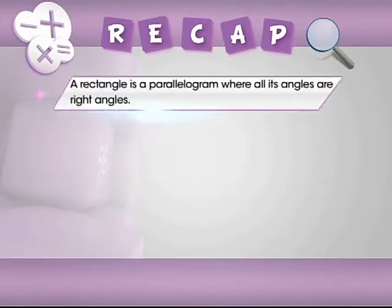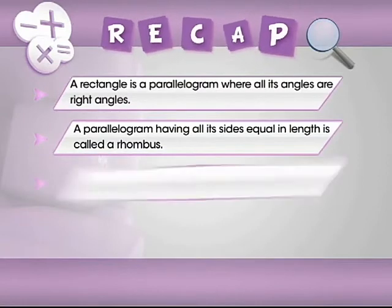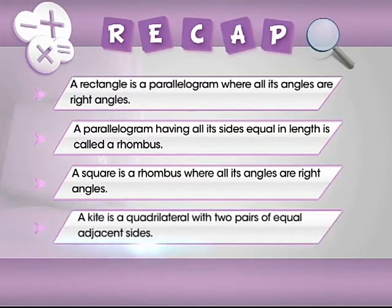A rectangle is a parallelogram where all its angles are right angles. A parallelogram having all its sides equal in length is called a rhombus. A square is a rhombus where all its angles are right angles. A kite is a quadrilateral with two pairs of equal adjacent sides.